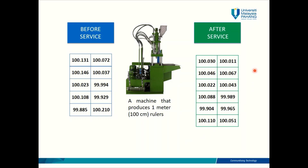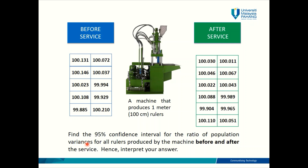So these are the given data — the length of those rulers collected before and after the service. By having this data, you can do several analyses. For example, you can use it to find a 95% confidence interval for the ratio of population variances produced by the machine before and after the service, and then interpret your answer.